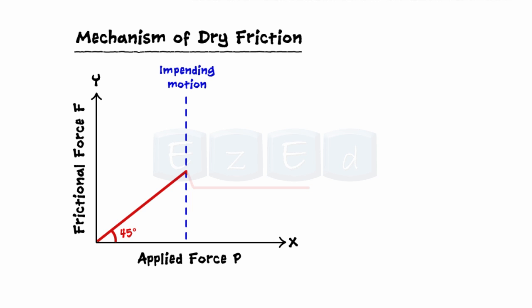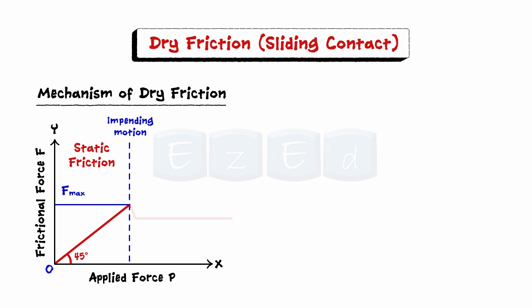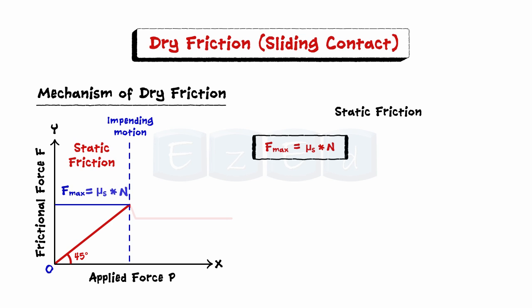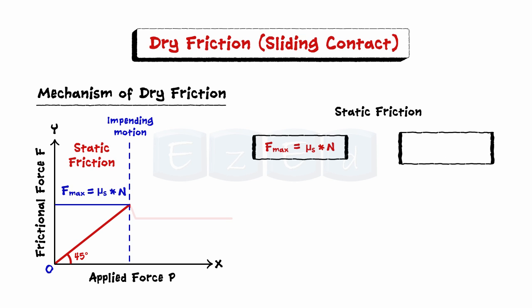The region in the graph till the point of slippage or impending motion is called the range of static friction. This friction force may have any value from zero to the maximum value. For a given pair of mating surfaces, the maximum value of static friction F_max is equal to the product of the coefficient of static friction and normal force N. The coefficient of static friction is the ratio of the limiting frictional force F_max and normal reaction N.